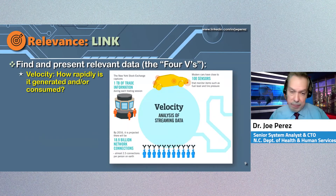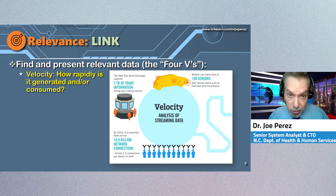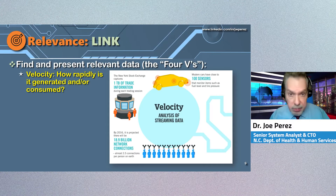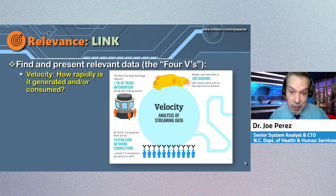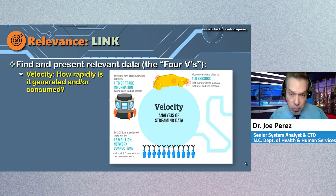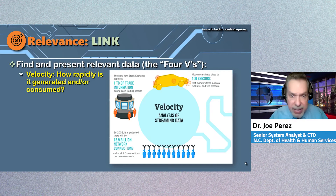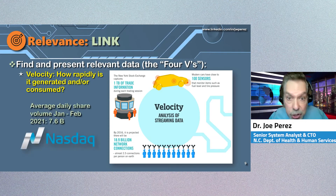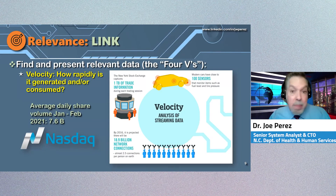The second V is velocity, which can be expressed in a couple of ways: the speed at which data is coming at you or being generated, and also the rate at which it's being consumed. Think of video streaming services like Amazon Prime, Netflix, Hulu, and others that, along with their customers, must rely on massive bandwidth for transmission and discrete processing for analysis. The same thing goes for commodities, stock trading, credit card sales, and other instant transactional-based industries where speed and timeliness of capture are critical. For example, in the first two months of 2021, more than 7.6 billion shares were traded every single day.